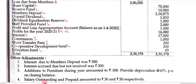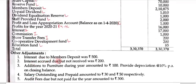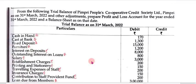Now every adjustment will have two effects. For adjustment 1, interest due to members' deposit Rs. 500 — the first effect goes to the expenditure side, adding Rs. 500 to interest on deposit. The second effect goes to the liability side as interest accrued due but not paid.